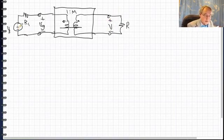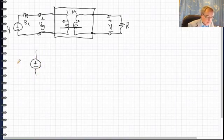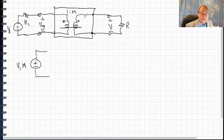then effectively on the output or secondary terminals of the transformer, we see a voltage source of value V times the turns ratio. So I'm going to write a voltage source. The round source is an independent source. Its value is V1 times the turns ratio M.